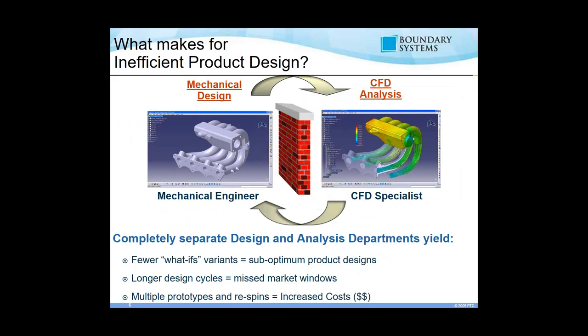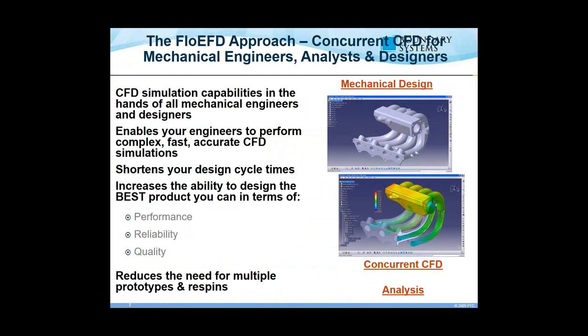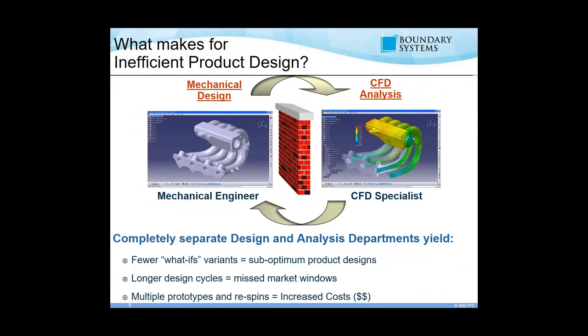Parametric software is built so that when you put in a dimension, your geometry responds. So why can't the CFD simulation code also respond to that? Why can't you change a dimension and automatically get new geometry that you can easily put into your CFD code for a new simulation? That is exactly where FlowEFD comes in.